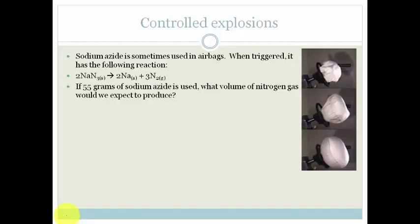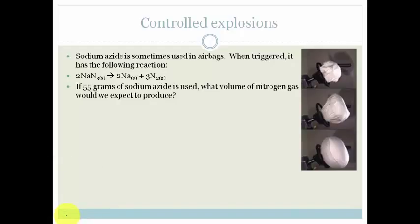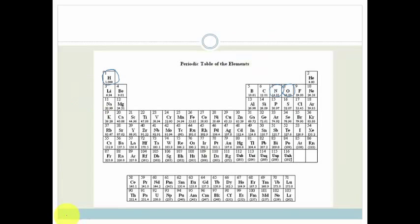Right, the question is, if we have 55 grams of sodium azide, what volume of nitrogen gas would we expect to produce? And again, I'm assuming this is at STP. So it says, if 55 grams of sodium azide, which is this stuff, is used, what volume of nitrogen gas, this stuff, would we expect to produce? And again, I'm assuming it's at STP. Right, so again we need to work with moles. So we need the molar mass of our sodium azide.